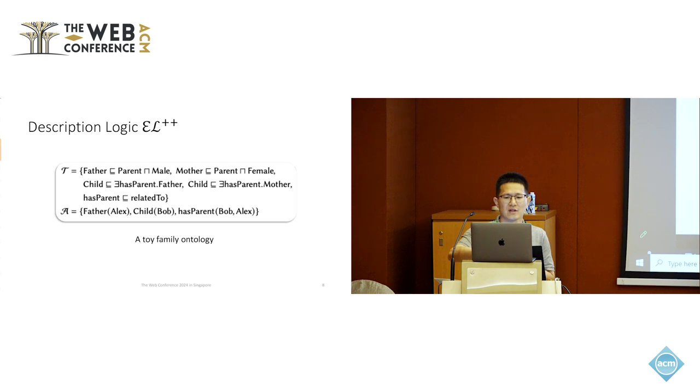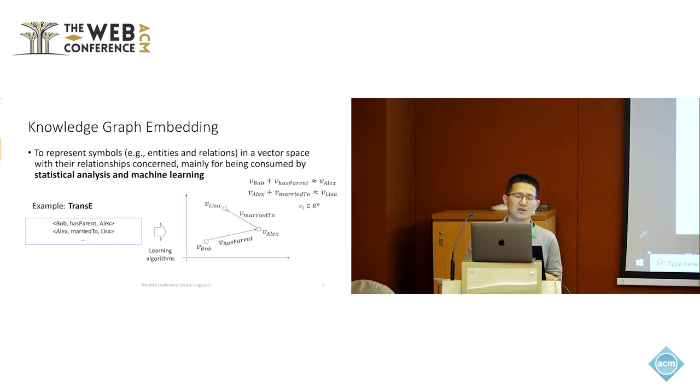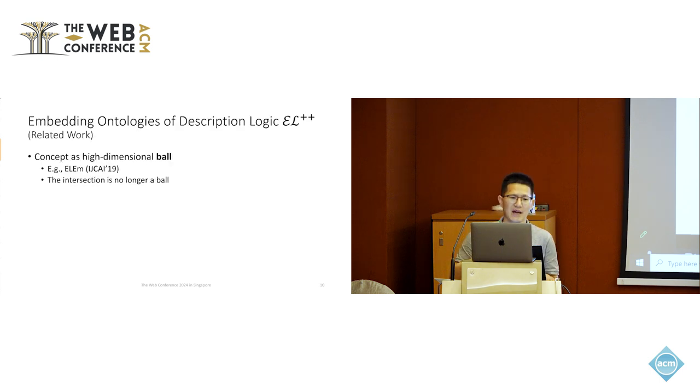Let's take a brief look at this toy example about family. You have already seen these axioms and the existential quantification. This is the role inclusion: has parent is a sub-role of related to. This is a T-box. The ontology usually also has an A-box, which defines some kind of data, for example, the membership of a specific person like Alex, who is an instance of father, and the role assertion has parent Bob, Alex, which is equivalent to relational facts represented widely in knowledge graphs.